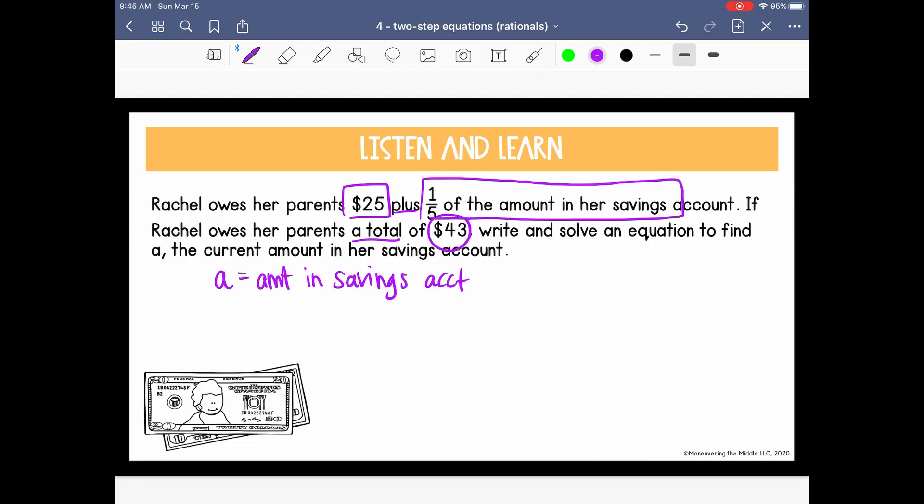Okay, so let's write what she has here. She owes $25 plus, how do we show 1 fifth of the amount in savings? Well, of typically means to multiply. So 1 fifth of the amount in savings, which we know is A. We know that all together she owes a total of $43. So here's our two-step equation. We can start isolating A by removing the constant term, subtract 25 from both sides. So now we know 1 fifth A equals 18.